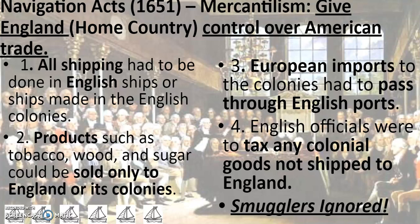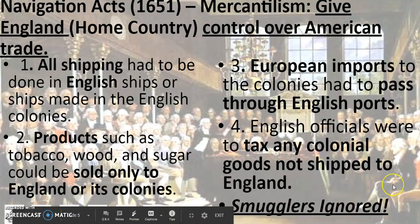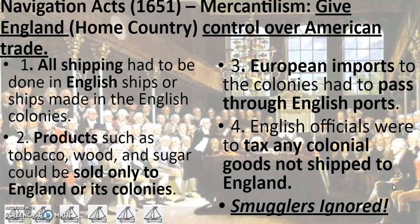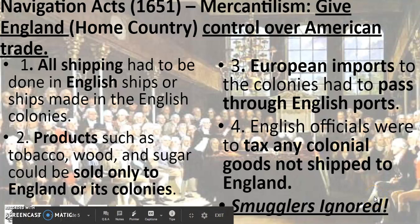Think about our trucking industry in America and all the goods moving around the country from Amazon — whoever controls the trucks and gets paid to ship things is making a lot of money. England wanted control over all of that. But the problem is smugglers ignored this, and one of the most famous and successful smugglers lived in Boston: John Hancock, who is one of the most prominent signers of the Declaration of Independence.